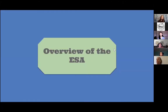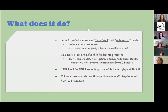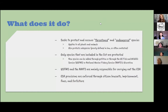Now that we've heard about the history and the events that led up to the creation of the ESA, we're going to talk about the overview and what it does in summary. So what does the Endangered Species Act do? It seeks to protect and recover threatened and endangered species.